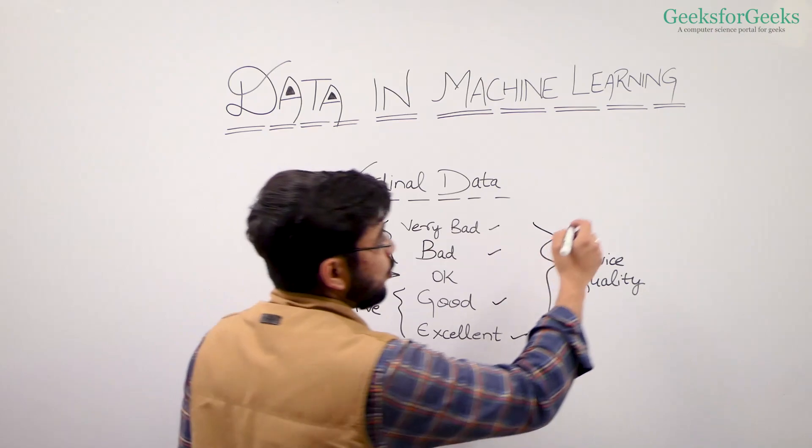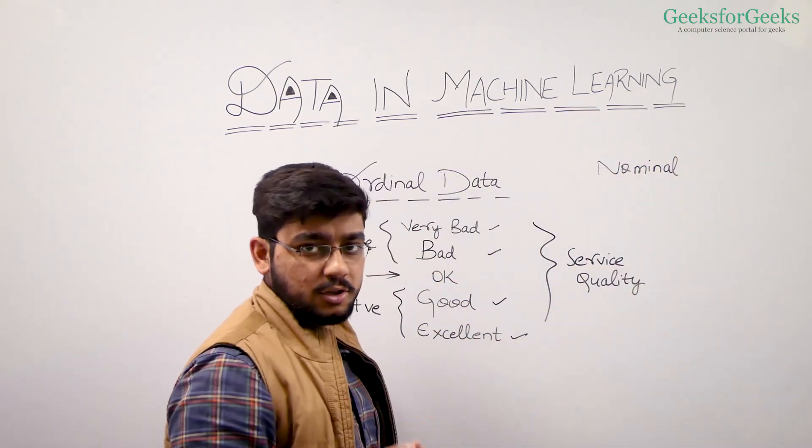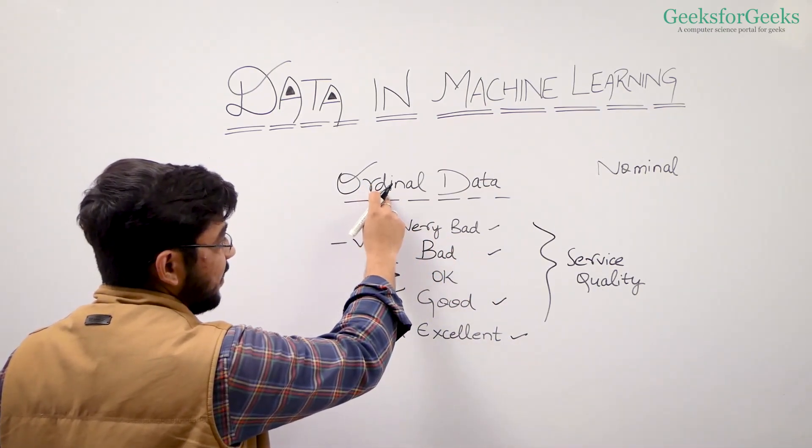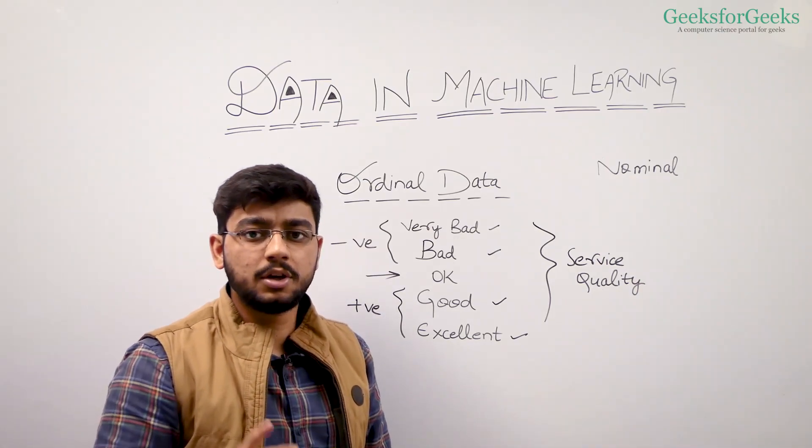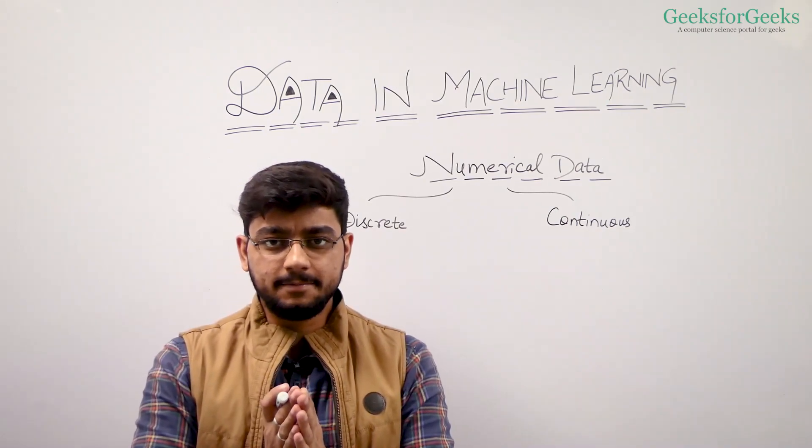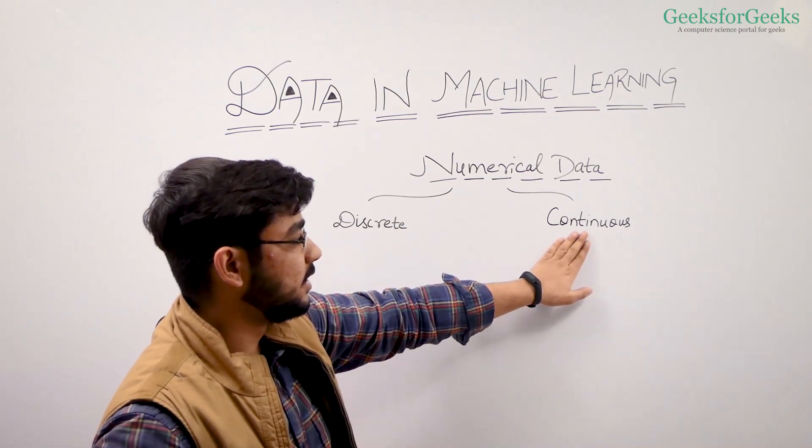So we now know what is nominal data - categorical data with no natural ordering - and ordinal data is categorical data with natural ordering. Now we'll be talking about numerical data. Numerical data is quantitative data which has two types: discrete and continuous.